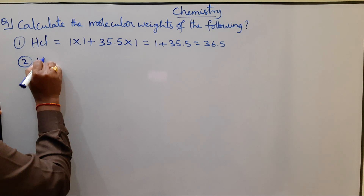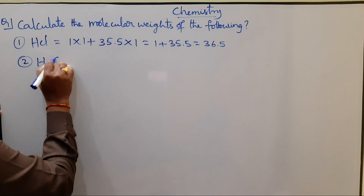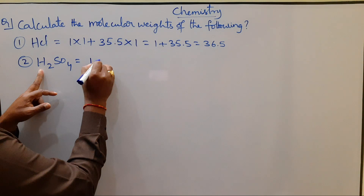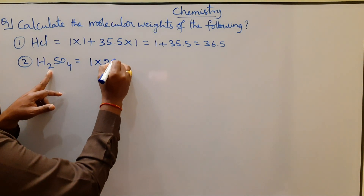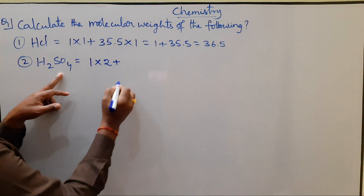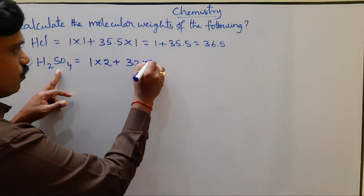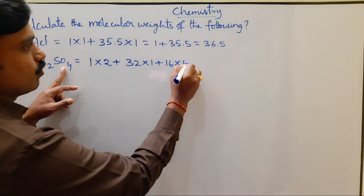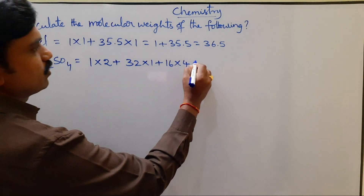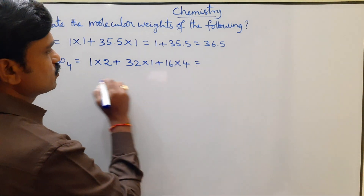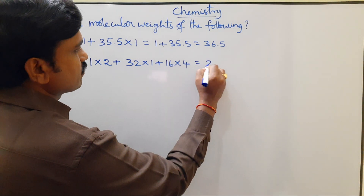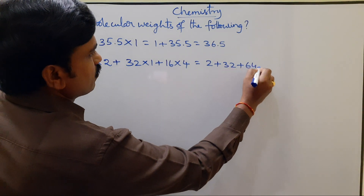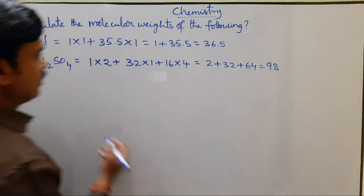The second example is Sulphuric acid, H2SO4. Here there are two atoms of hydrogen, atomic weight one. So 1 × 2, plus Sulfur atomic weight 32 × 1, plus Oxygen atomic weight 16 × 4. Total: 2 plus 32 plus 64 equals 98.